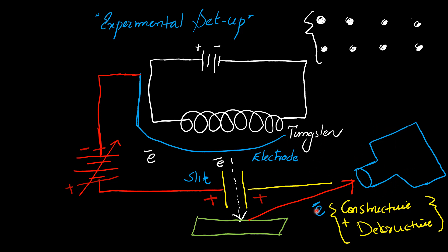Since interference and diffraction are properties of a wave, this basically proved that the electron, which is a particle, behaves like a wave. On the basis of the Davison and Germer experiment, it was experimentally proved that electrons behave like a wave.